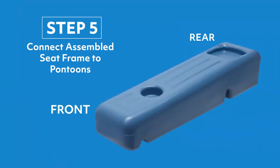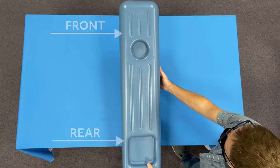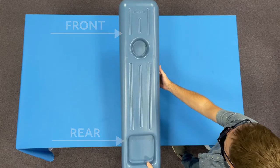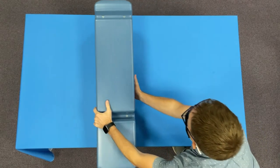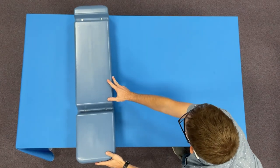Step five, connect assembled seat frame to pontoons. Place the pontoons on a workbench or table. This is an important step. Do not ignore this.